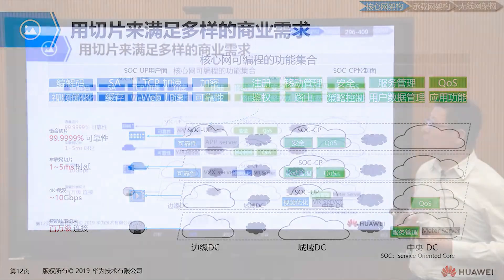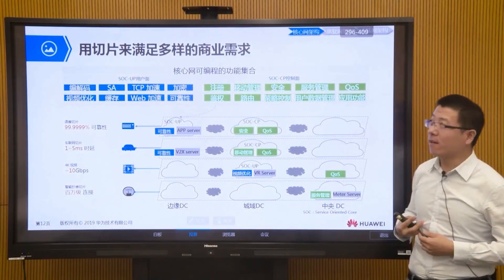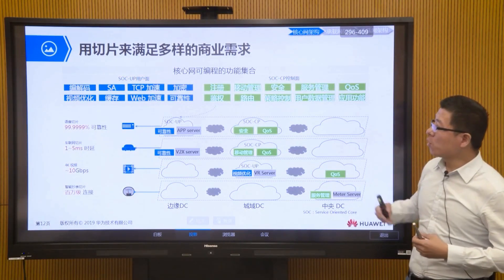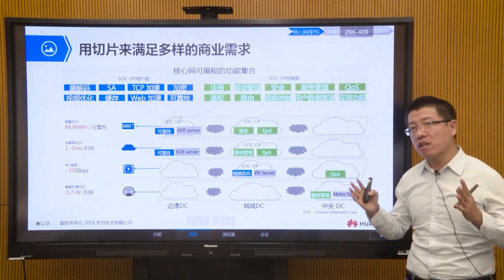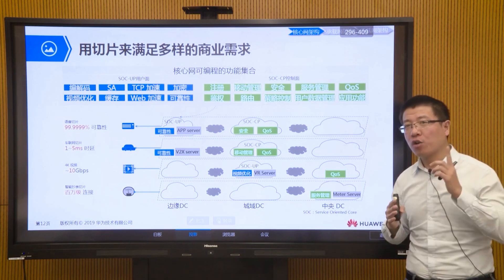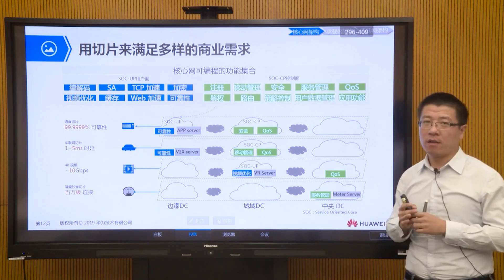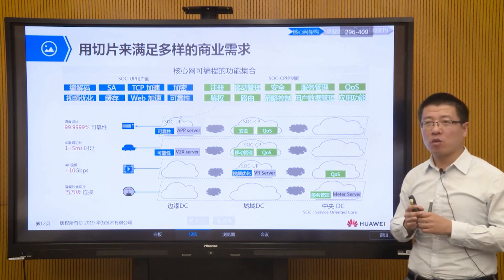This is the value brought by 5G network slicing: it can enable more vertical industry applications and ensure isolation and security between each application. We meet the differentiated needs of vertical industries through slicing to satisfy diverse business demands. Now we'll introduce from the core network perspective how slicing is implemented.